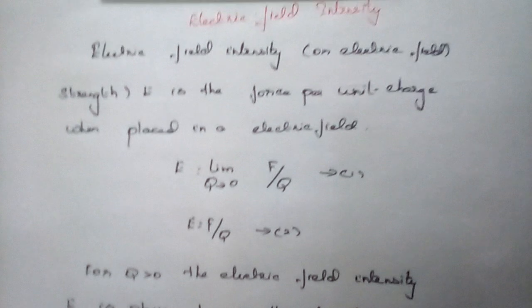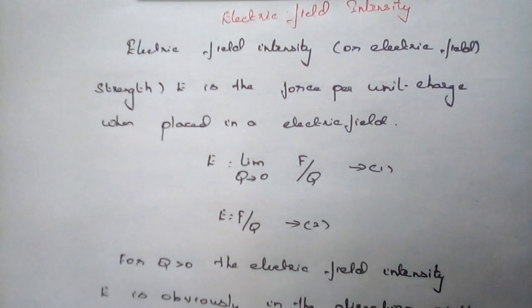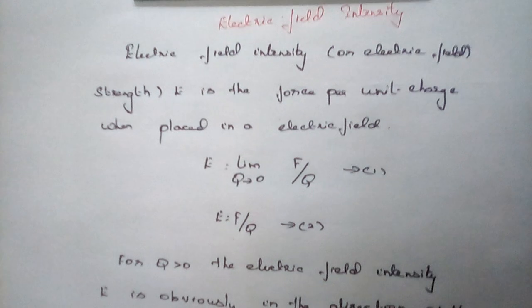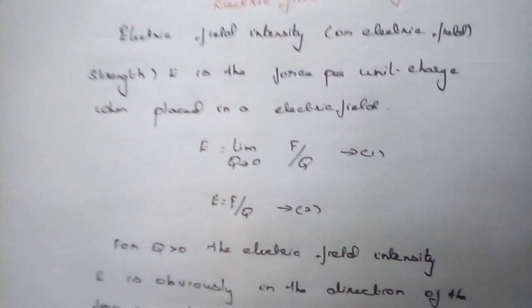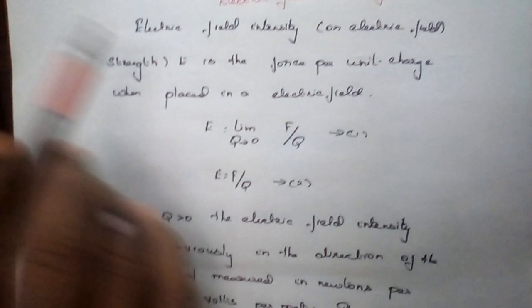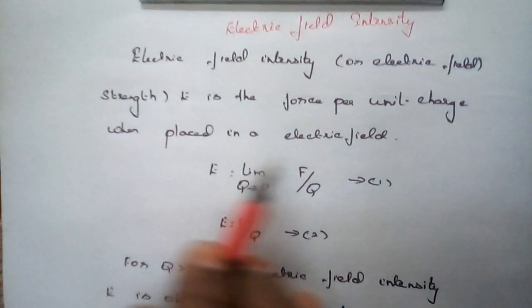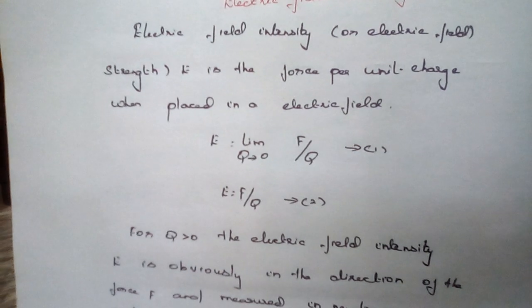Already, we have discussed about Coulomb's law. So with this session, let us continue with the case of electric field intensity. The electric field intensity is defined as the ratio of force divided by electric charge — that means the electric field intensity or electric field strength is the force per unit charge when placed in an electric field.